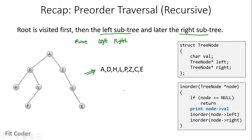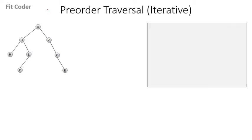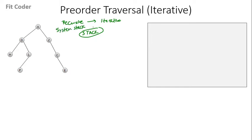Now let's see the iterative method of doing the pre-order traversal. So whenever we are converting a recursive approach to an iterative approach, we make use of a stack. Because the recursive method uses an implicit stack provided by the system, when we want to convert it to iterative, we need to use an external stack.